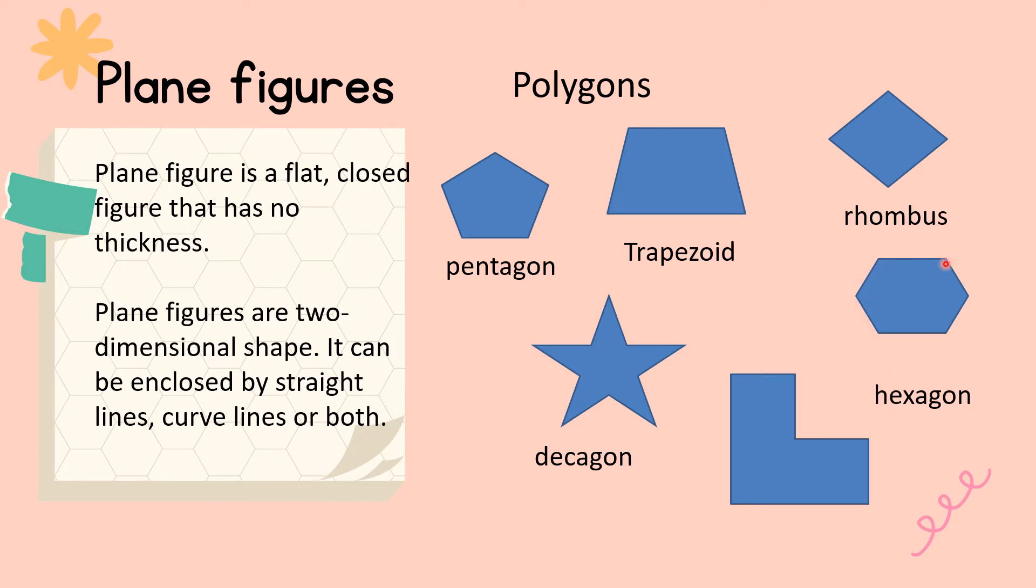One, two, three, four, five, six. This one also is a hexagon because one, two, three, four, five, six sides also. So they are called plane figures because they are flat, closed figures that has no thickness.